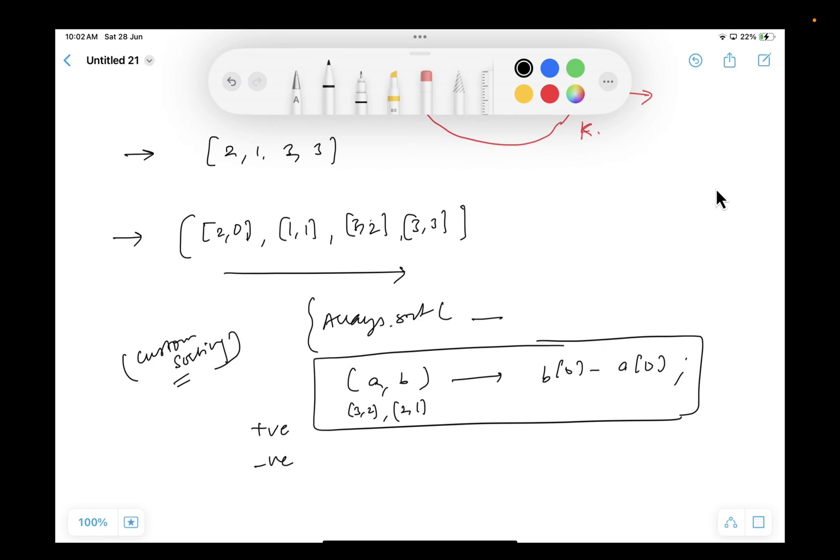It means do not sort, it's already sorted. And you can see, sorted in decreasing order, see 3 to 2. But if it was opposite,